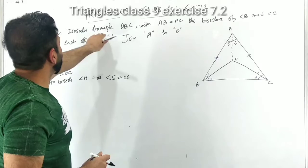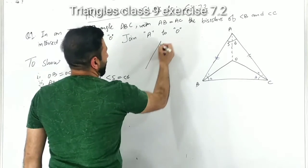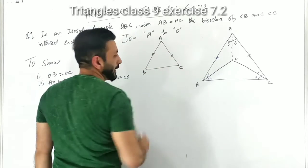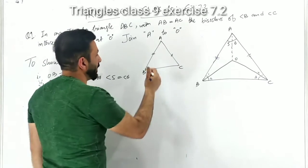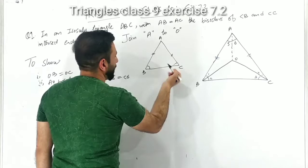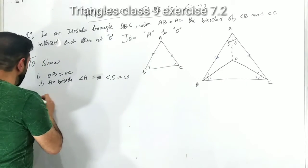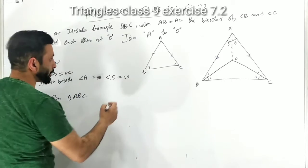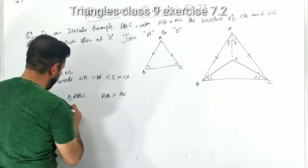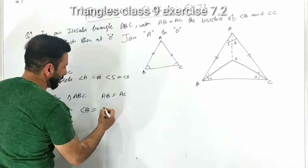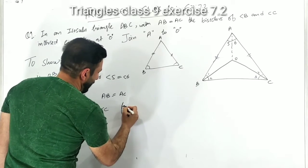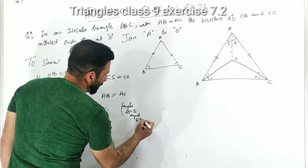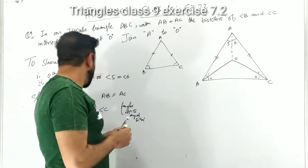First, what is given in the question? In triangle ABC, AB equals AC is given. We know that if two sides are equal, the angles opposite to them are also equal. So in triangle ABC, AB equals AC, therefore angle B is equal to angle C — because these are angles opposite to equal sides.